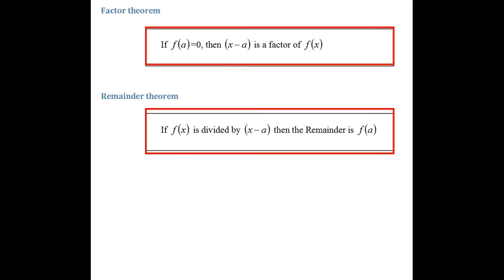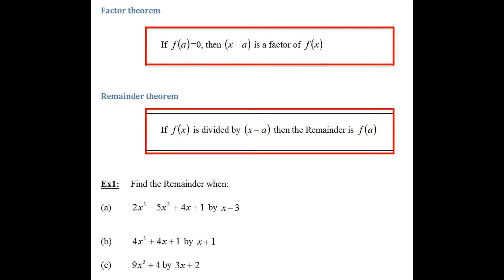So let's see the remainder theorem with the following examples. With example 1, find the remainder when — part a — 2x cubed minus 5x squared plus 4x plus 1 is divided by x minus 3. So let's see the remainder theorem in action. Back to the paper and pen.